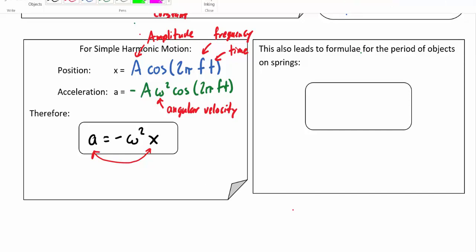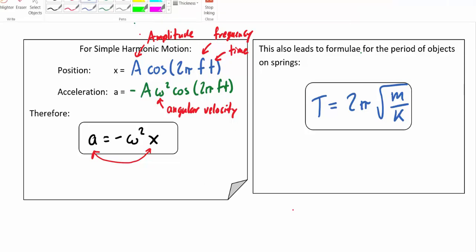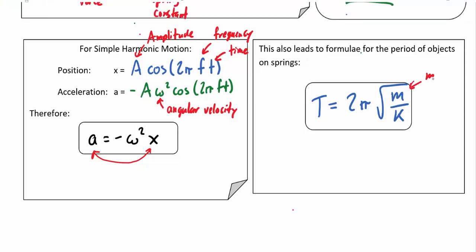Without going into the full derivation, if we're looking specifically for the period of an object on a spring, the period equals 2π times the square root of m divided by k, where m is mass and k is the spring constant. There are only two factors that affect the period of its motion.